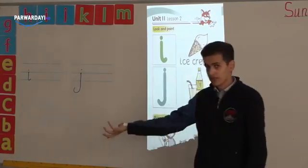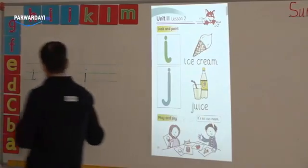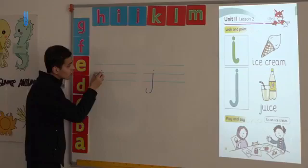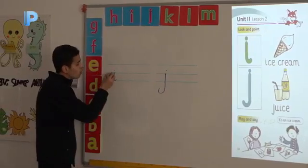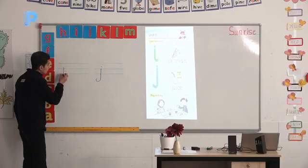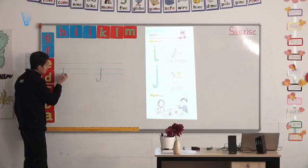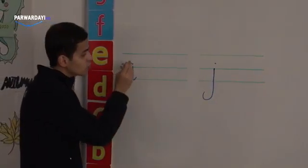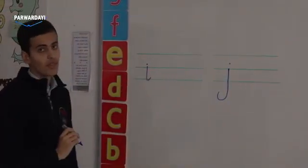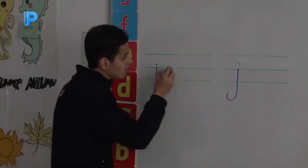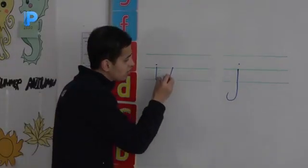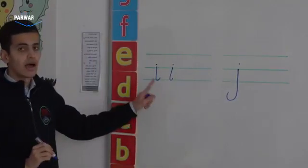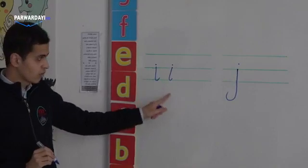So, now, let's look at how we write these letters. Shall we? Look, this is I. For writing I, we go from the second line to here and then it goes just a little over. Then the second step is to put a dot here on the I. Let's do it again. From here, then a dot. This is I. I, I, I like ice cream.